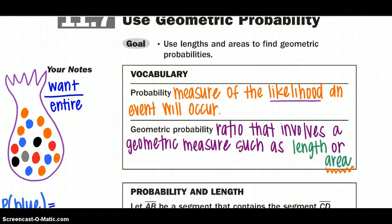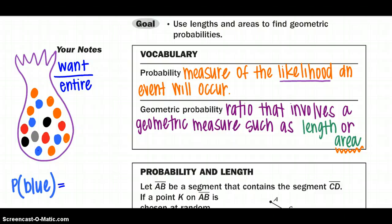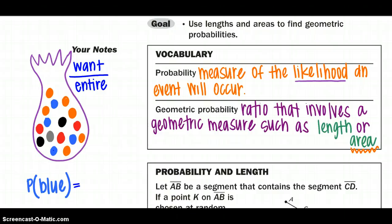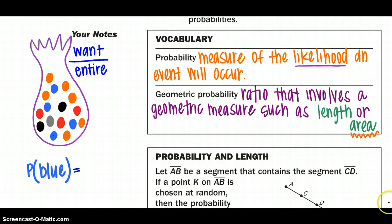So just a quick example of what you have probably used before with probability. In my bag of marbles, I want to know what the probability of pulling a blue marble is. And how you can kind of think about setting up your probability: What do you want to happen over how much is in the entire bag? So this is how probability will be written, the probability of the blue marble. I have four blue marbles in my bag, so that's going to go on the top over my entire bag.